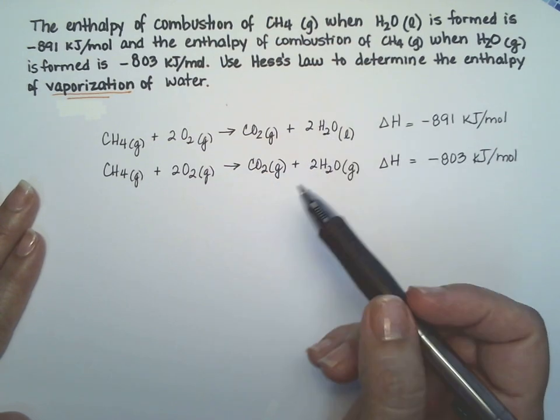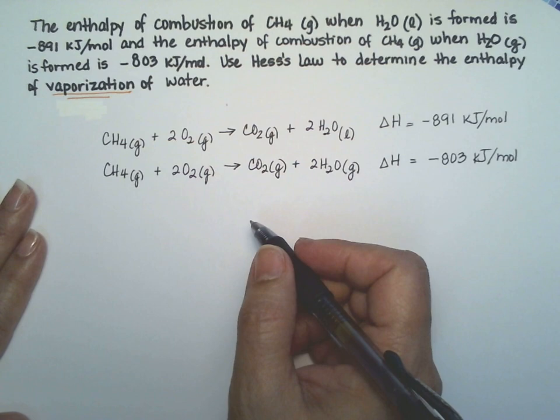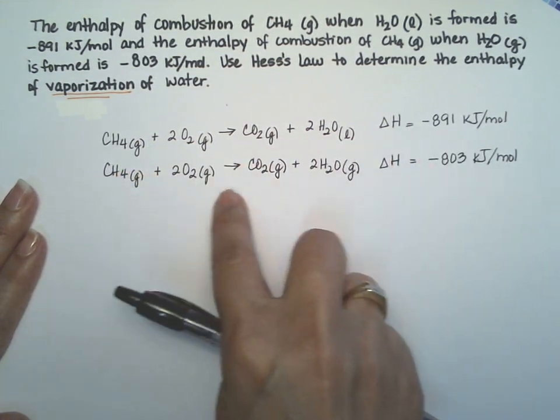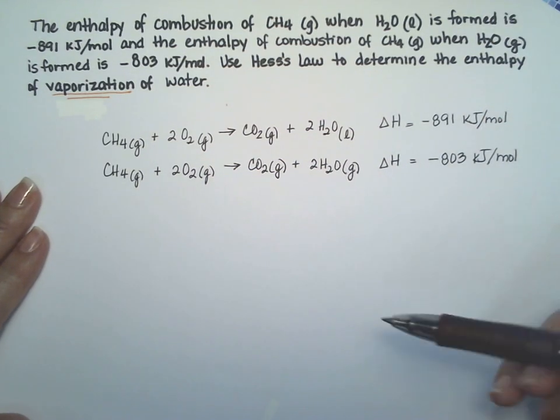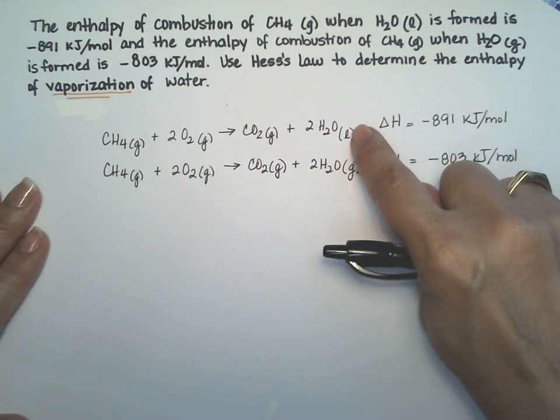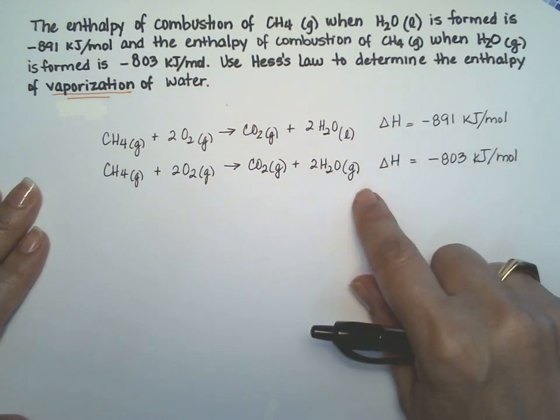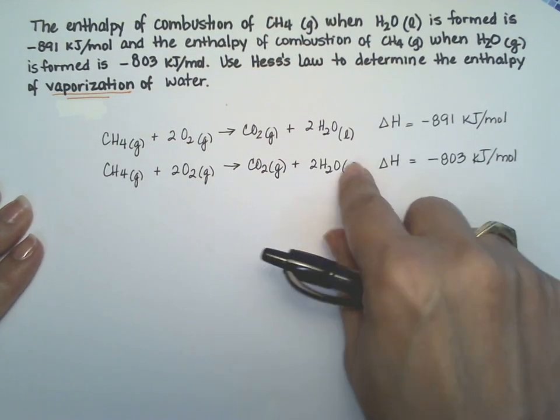And the problem wants us to use Hess's law to determine the enthalpy of vaporization of water. I have gone ahead and written down the reactions that they gave us. Notice the difference is in the final state of water. In the top one the water is liquid. In the bottom one the water is in the gas phase.